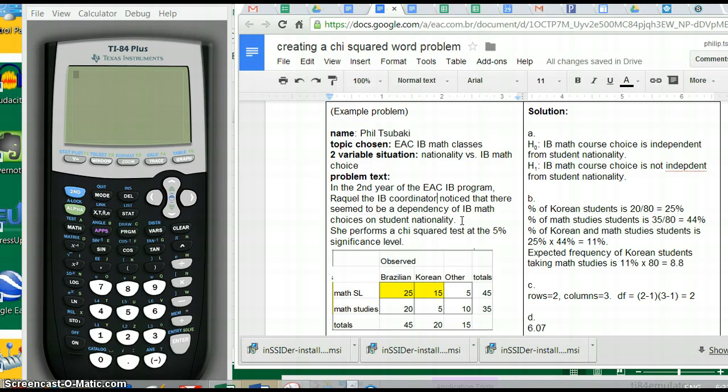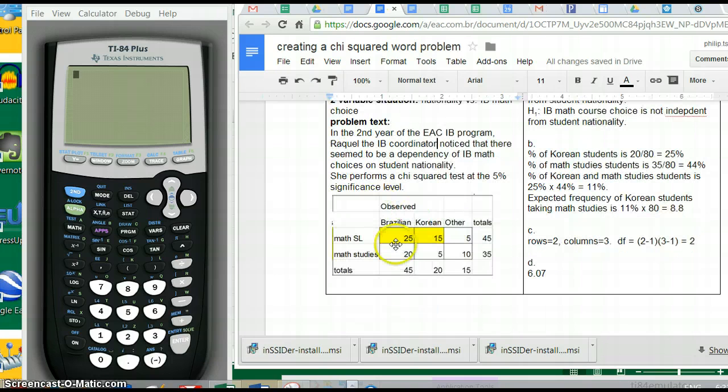She performs a chi-squared test at the 5% significance level. She sees the following statistics observed. The total number of students is 80 and the distribution is like this.